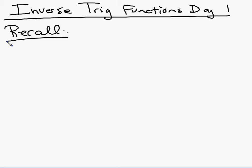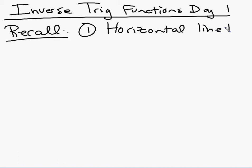Number one — and this is the one that really helps us today — inverse functions have to pass a certain kind of test. Do you remember which test that is? The horizontal line test. If I draw a horizontal line through the function and it hits it more than once, then it does not have an inverse. So to have an inverse, it must pass the horizontal line test.